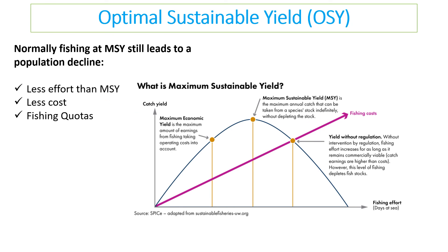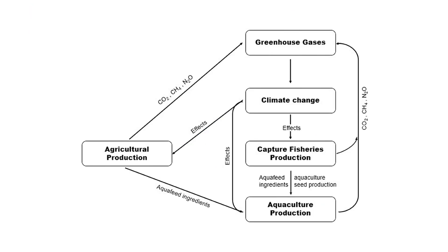To make fishing sustainable, we need to consider optimal sustainable yield — the idea that we need to do a bit less, with less effort and lower catch levels. This leads to optimal sustainable yield, which would be created by fishing quotas. It can actually help fishing because less effort is needed and therefore costs are reduced. Importantly, throughout this discussion of why fishing isn't sustainable and how to make it sustainable, we haven't mentioned climate change. All the factors affecting climate change can also affect aquaculture — the currents are changing, and other impacts are potentially going to cause maximum sustainable yields to drop even further.